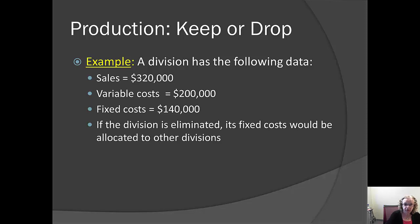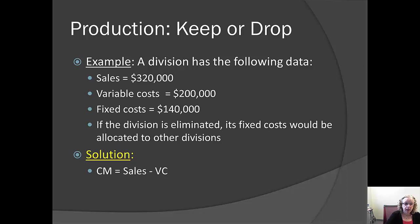Let's look at a slightly different example. A division has $320,000 in sales, variable costs of $200,000, and fixed costs of $140,000. If the division is eliminated, its fixed costs would have to be carried by other divisions. Should the division be eliminated? Contribution margin is sales minus variable costs: $320,000 minus $200,000 equals $120,000 — so this division is contributing $120,000 to firm profitability.